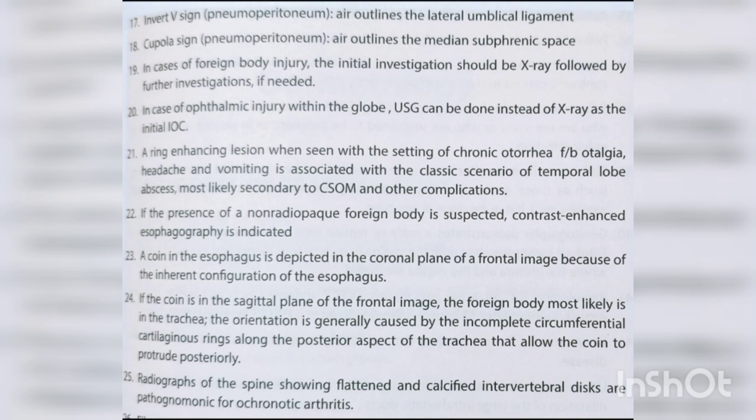A coin in the esophagus is depicted in the coronal plane on frontal imaging due to the inherent configuration of the esophagus. If the coin appears in the sagittal plane on the frontal image, the foreign body is most likely in the trachea. This orientation is caused by incomplete circumferential cartilaginous rings along the posterior trachea that allow the coin to protrude posteriorly.